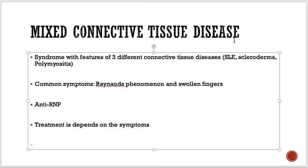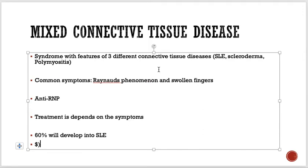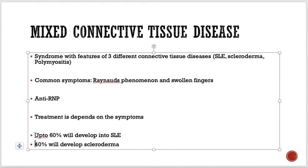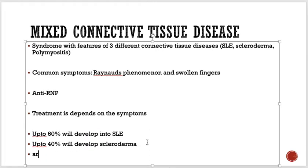Regarding prognosis, up to 60 percent of those with mixed connective tissue disease will develop into SLE, and around 40 percent will develop scleroderma. Only around 10 percent of patients remain as MCTD.